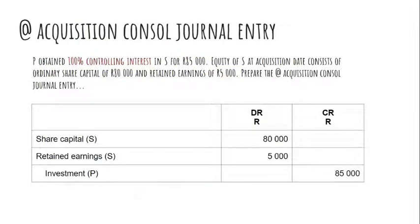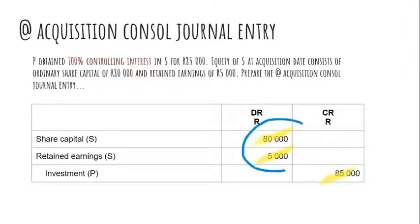Straightforward: I have the equity of S at acquisition date that I eliminate against the common item, the investment coming from the separate financial statements of P, which I now credit. Because the consideration that P was willing to pay for this 100% interest is equal to his 100% proportionate share of the R85,000 at acquisition date, we do not have any goodwill or gain from bargain purchase.